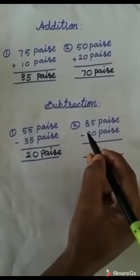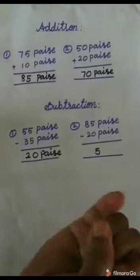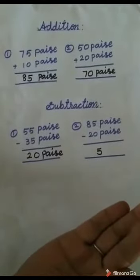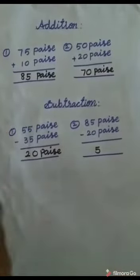Next, we subtract the tens place. 8 minus 2. Close the fingers. 2 after 3, 4, 5, 6, 7, 8. That's 6.